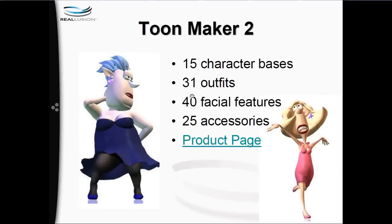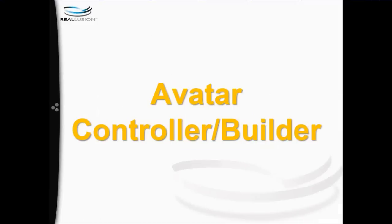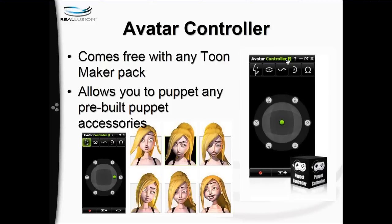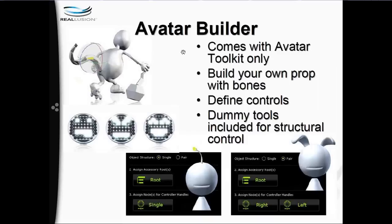Let's explore the Avatar Controller and Avatar Builder briefly. The Avatar Controller is the panel that comes free with any ToonMaker pack — it lets you control all your characters' accessories included with the pack, such as nose, eyebrows, and eyes. That's what 'pre-built' means here: it's included in the Reallusion pack. If you have the Avatar Builder, which comes with the Avatar Toolkit pack, this allows you to create your own puppetable props, define the controls, and use dummy tools for structural control.